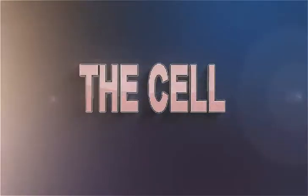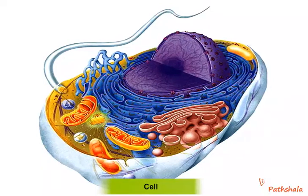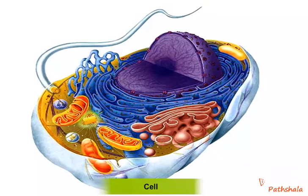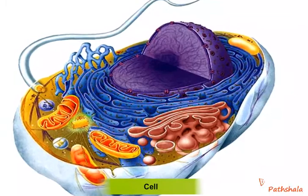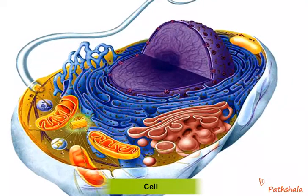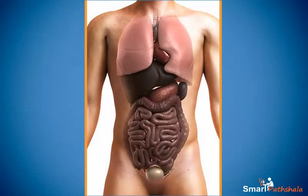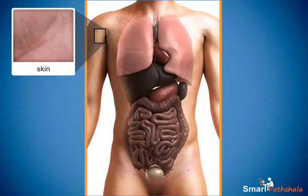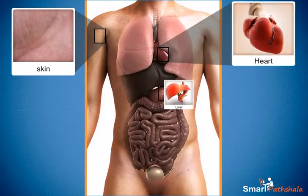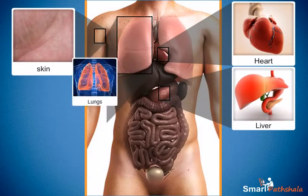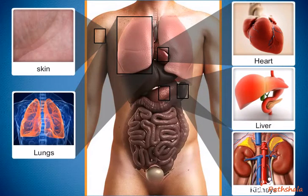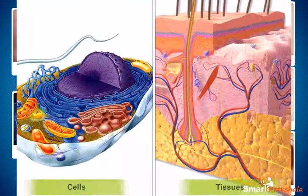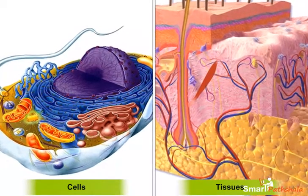In this chapter, let us learn about the structure of cell, types of cells, and various organelles of the cell. We all know that the human body consists of various organs like skin, heart, liver, lungs, kidneys, etc. All these organs are made up of tissue, and tissues are made up of several cells.